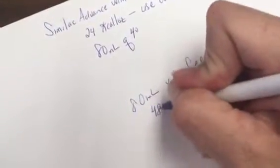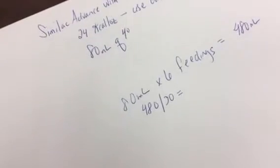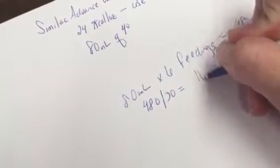If you want to round that to ounces, you just take the 480 divided by 30 because there are about 30 mils in an ounce. And that gives you a total of 16 ounces.